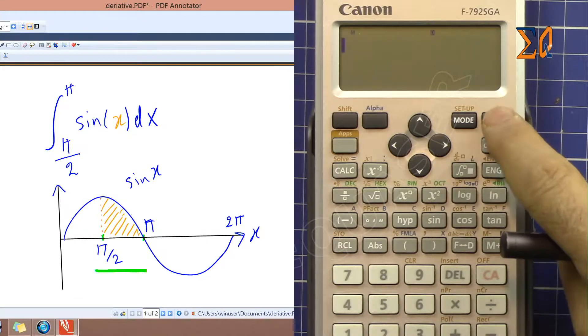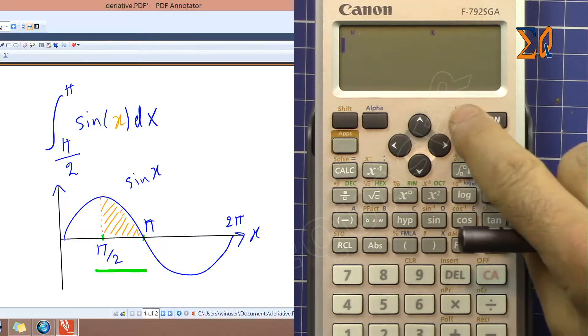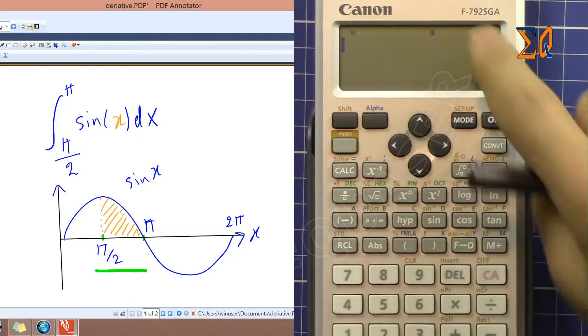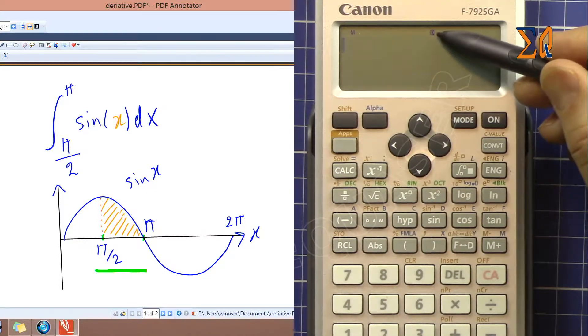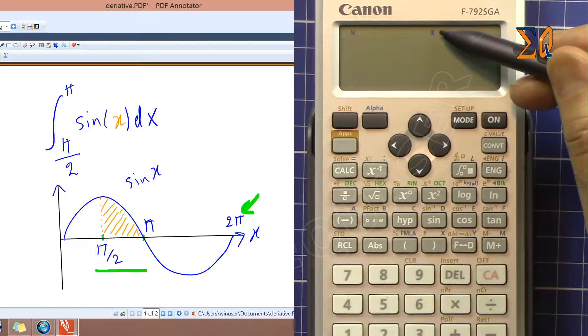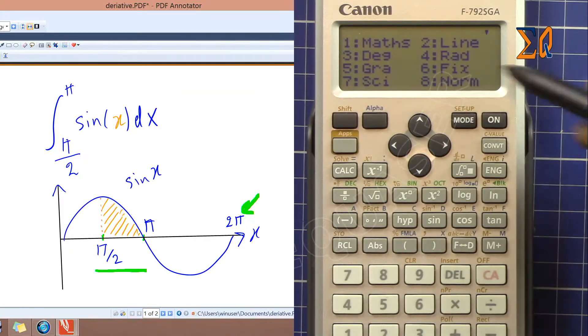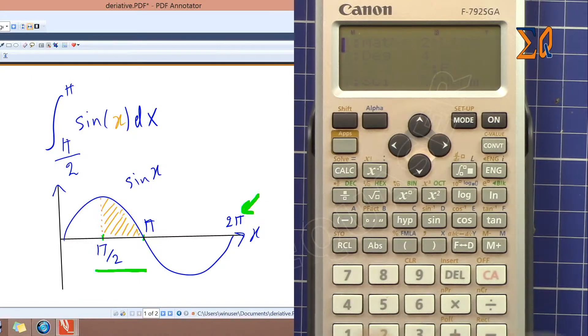Let me turn on the calculator. Make sure you are in normal mode. If not, press mode and then 1. The angle is very important because here the angle is in radian. Make sure your calculator is also set in radian. Now it's in degree, so press shift, setup, number 4 for radian.